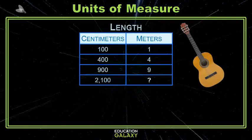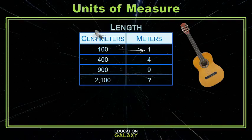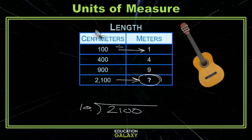One last one here with length in the metric system. A meter is about the length of a guitar. A centimeter is very small — about the length of a fly. So we're going from this small unit to the bigger unit, which means we divide. To get from 2,100 to our answer, we divide by 100. So 21 meters equals 2,100 centimeters.